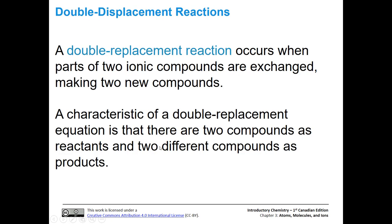Now let's talk about single displacement — actually, let's get a quick introduction to double displacement reactions. We're going to come back to these with precipitation reactions also, but let's look at them simply right now. A double displacement reaction is a reaction where parts of two ionic compounds are exchanged, and we're going to make two new compounds. We'll have two compounds on the reactant side and two new compounds on the product side.